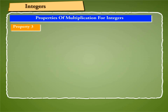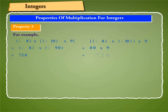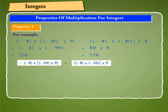Property 3: Let us multiply any three integers by taking them in different groups and see whether the product in each case is the same. For example, minus 8 into (minus 10 into 9) is equal to minus 8 into minus 90, which equals 720. And (minus 8 into minus 10) into 9 is equal to 80 into 9, which also equals 720. Therefore, minus 8 into (minus 10 into 9) equals (minus 8 into minus 10) into 9. Thus, given three integers, they need not be multiplied in the order given — we can group them in easy combinations and find their product.